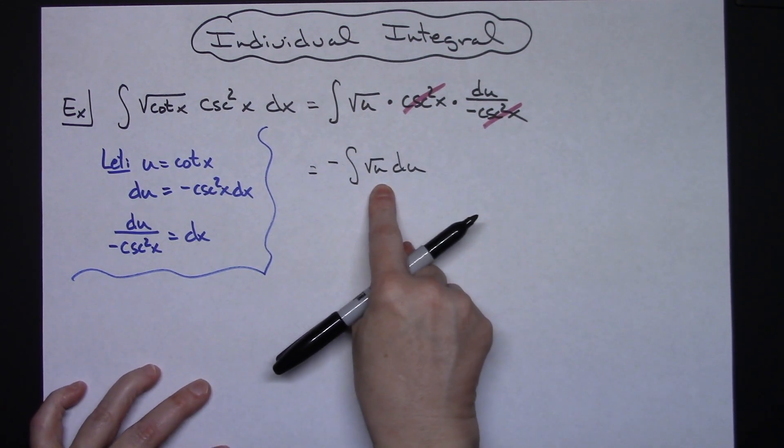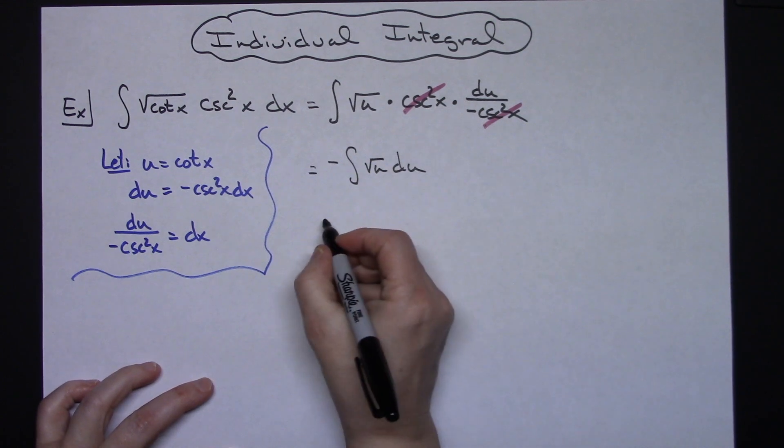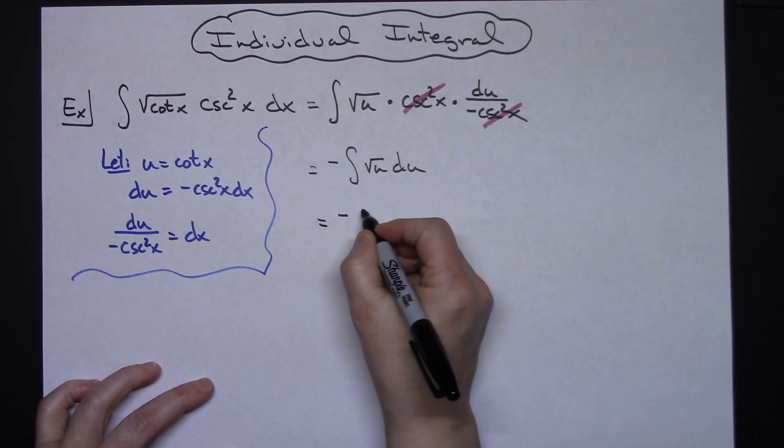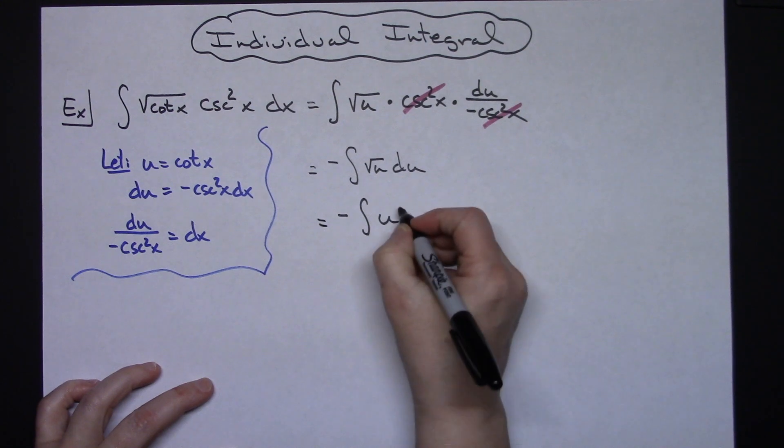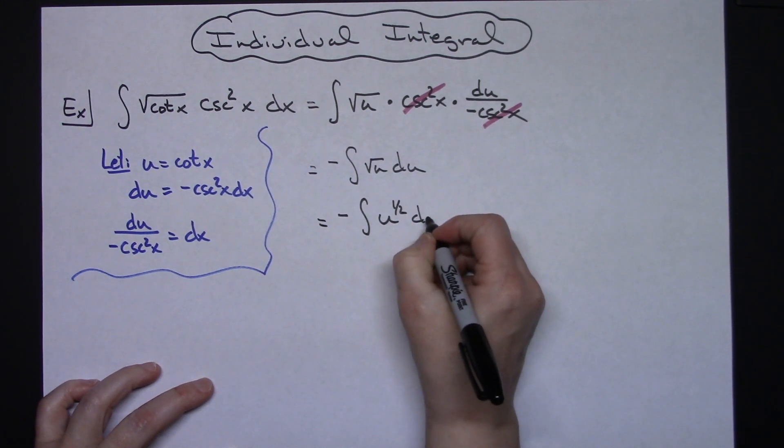Now to be able to do that integral it's going to be easier if we rewrite it as a power. So we'll have negative the integral of u raised to the 1 half du.